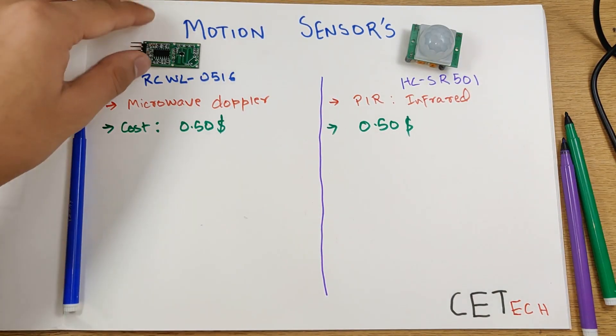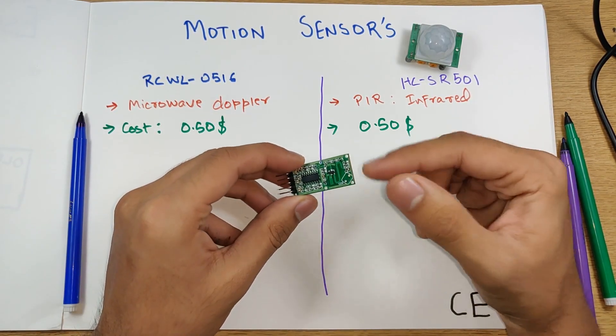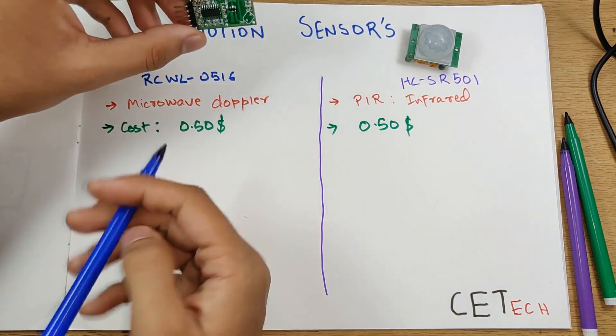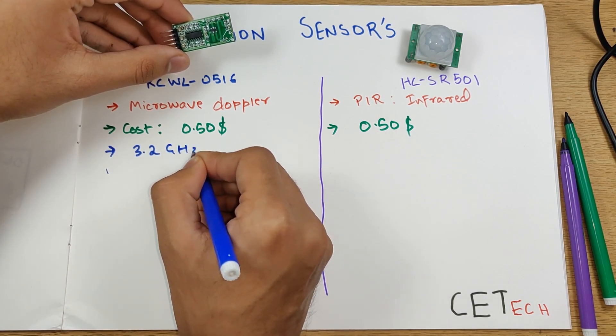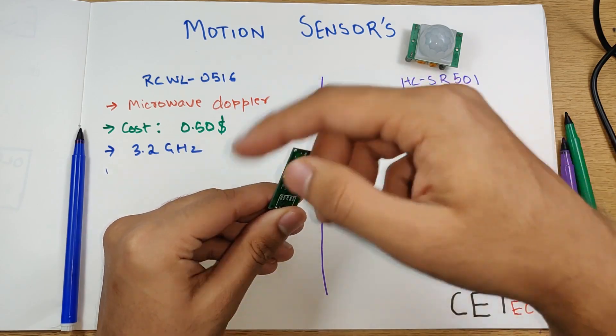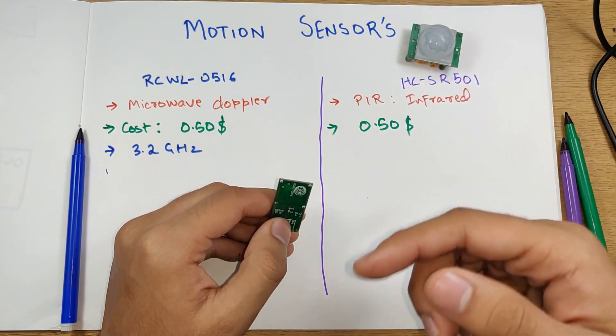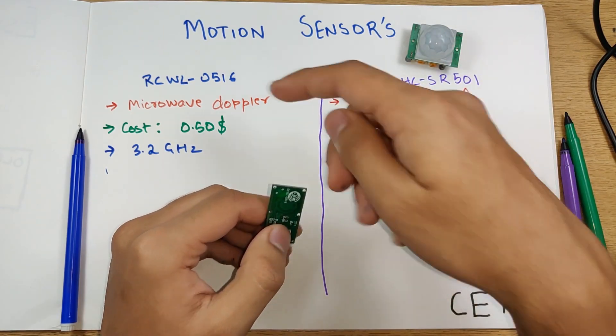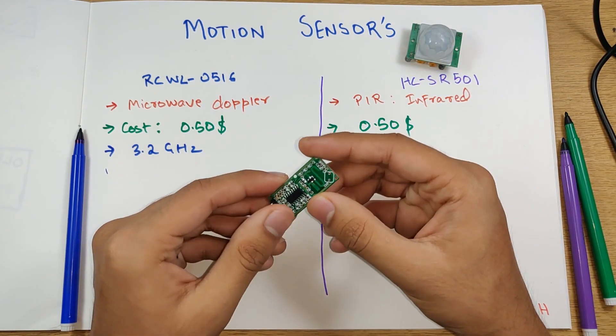How the microwave sensor, that is the RCWL-0516, works is it detects a change in frequency by doppler effect. This operates on a frequency band of 3.2 gigahertz. It is radiating this frequency and when there is some motion around this module, there's a change in the frequency by bouncing of that object. That is accounted by the doppler effect and this change is read by this module and motion is detected.